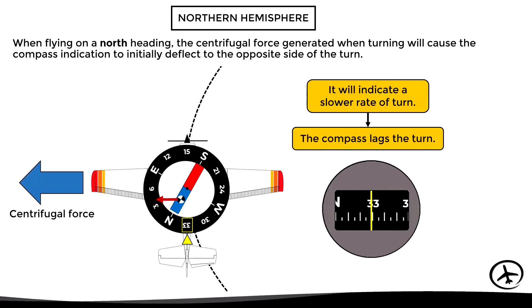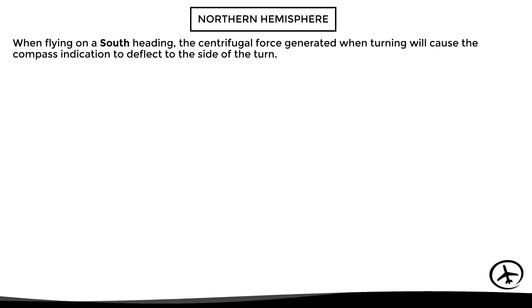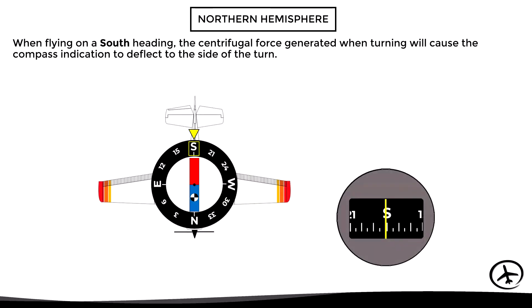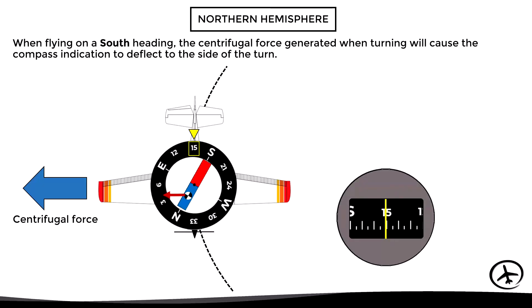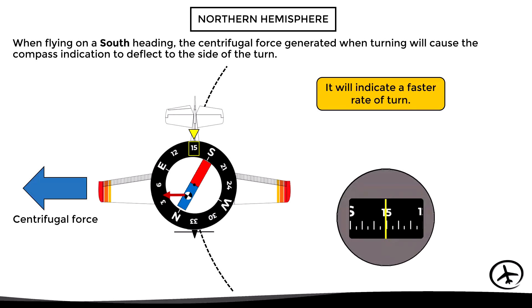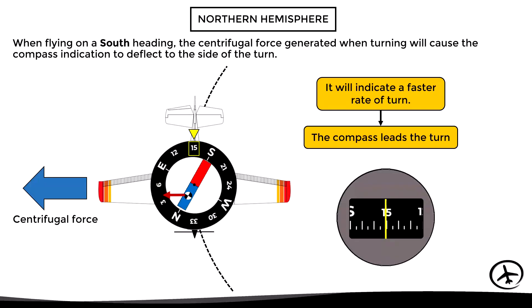On the other hand, when flying on a south heading in the northern hemisphere, the centrifugal force will cause the compass to deflect to the side of the turn with an excessive rate of turn. For example, if the aircraft turns left from a south heading, the compass will indicate the correct direction but with a faster rate of turn. In other words, the compass leads the turn.